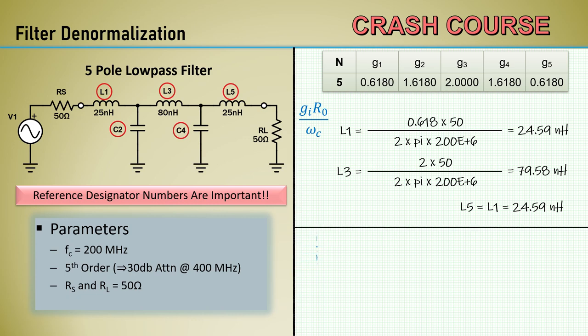Bringing over the equation to denormalize the capacitors, C2 equals G2 from the table, which is 1.618 divided by 2 times pi times 200E to the sixth times 50 equals 25.75 picofarad. Since G4 equals G2, C4 will equal C2, and that's all there is to it.